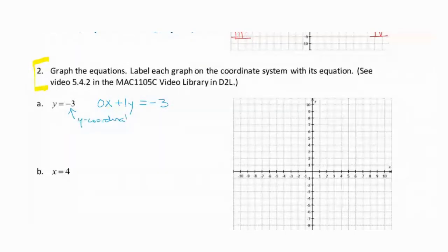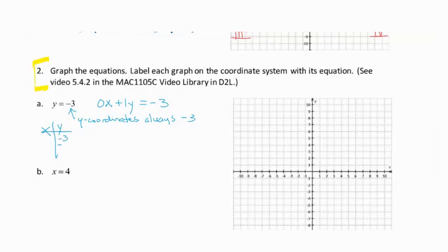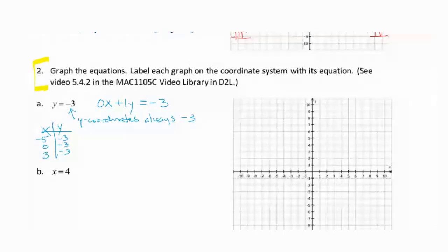So if the y coordinates of any solutions are always negative 3 and the x coordinates can be anything, I make a little xy chart and just list negative 3 a couple of times for y and I let x be whatever I want. It could be negative 5, it could be 0, it could be 3, whatever I want. And then if you plot those points you're going to see that it in fact is a horizontal line.